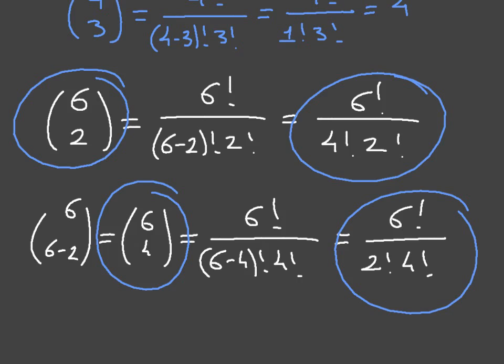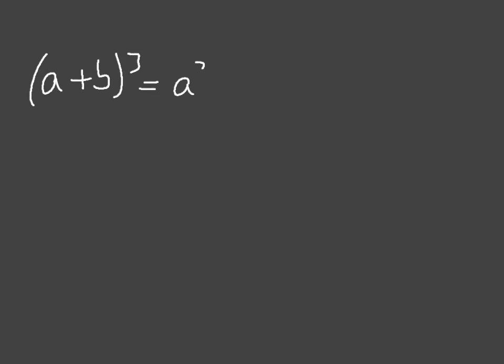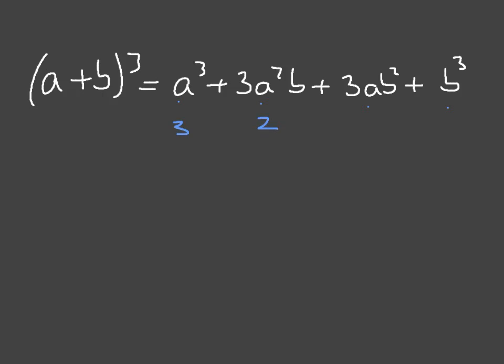Keep that in mind — it allows us to do half as many calculations. Now, looking at (a + b) cubed, which equals a cubed + 3a squared b + 3ab squared + b cubed, let's focus on the powers of a from left to right. The first term has a to the power of 3, the second has a to the power of 2, the third has a to the power of 1, and the last term has no visible a — but that's a to the power of 0.